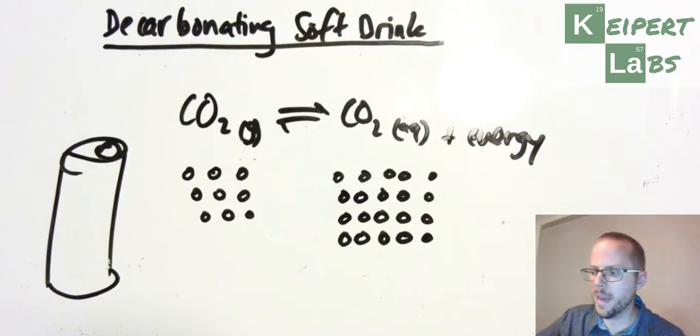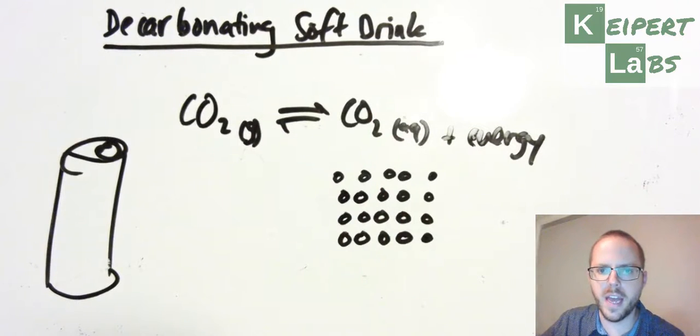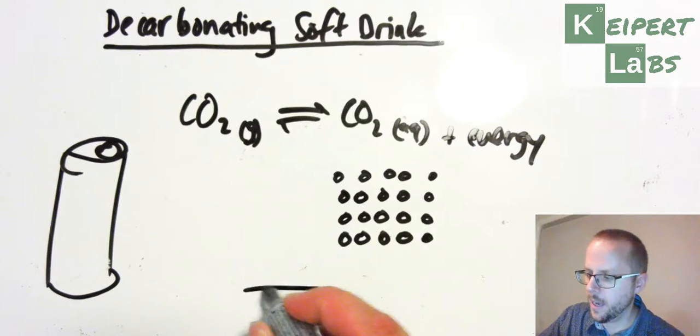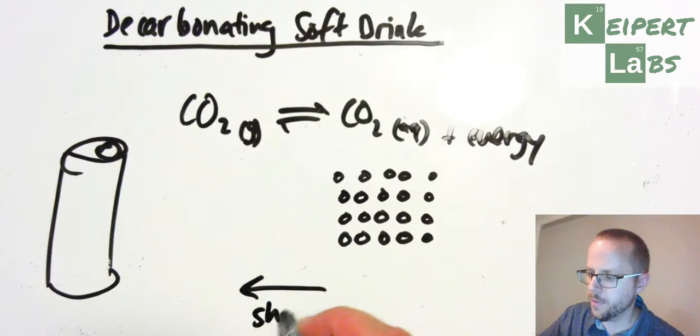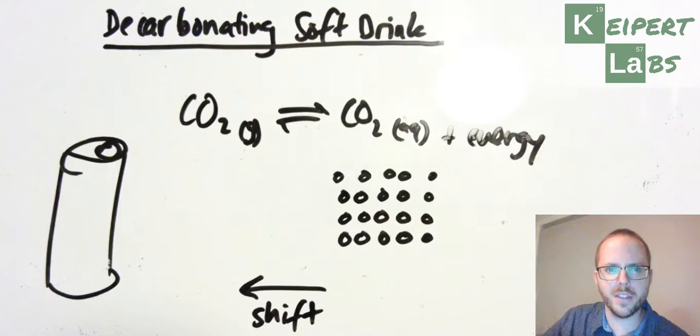So what's happening, as soon as you open that, and you hear that hiss, all that gas carbon dioxide has been released. The system is now, it's not closed anymore, it's open. And so what that means is that that gas has escaped. So, we're going to get a shift, and we're going to get a shift to the left-hand side to try and replace some of that carbon dioxide that's been lost.